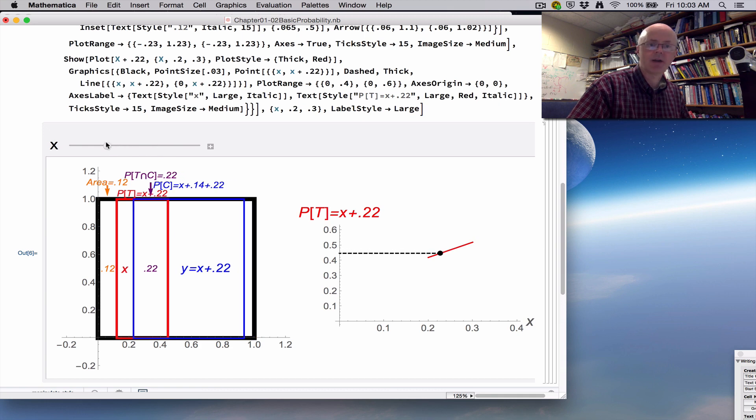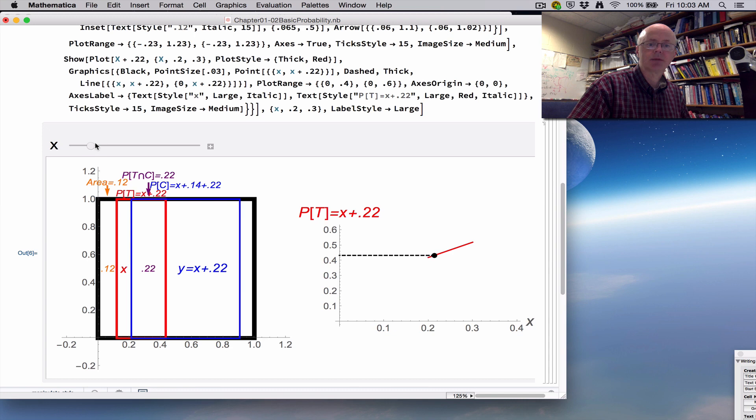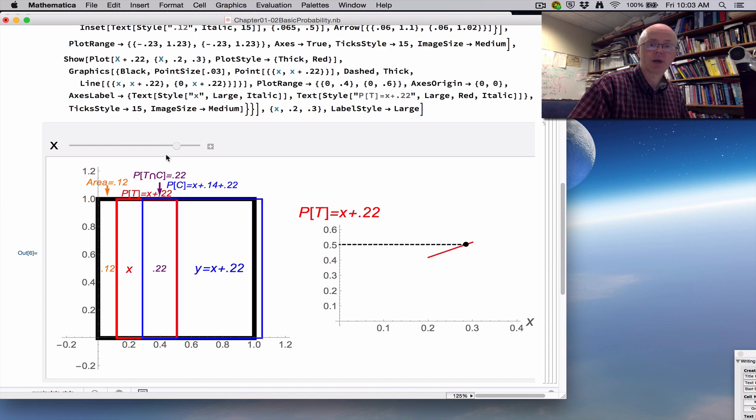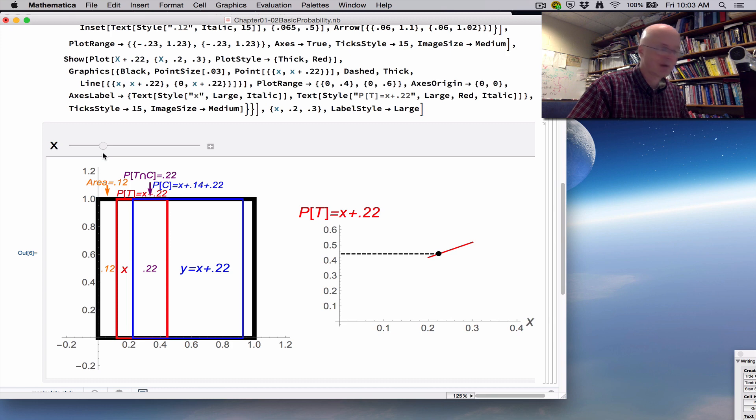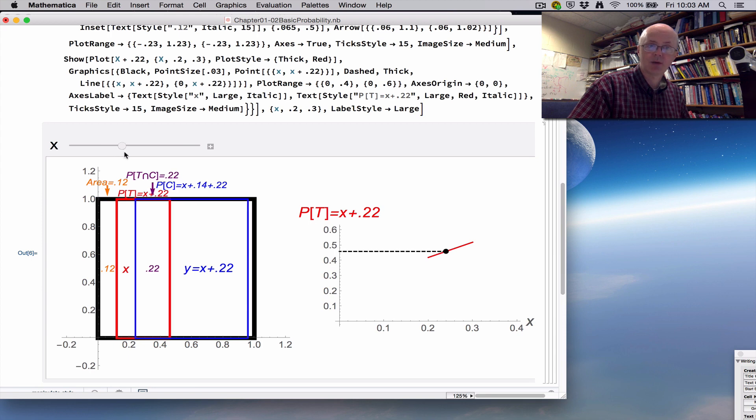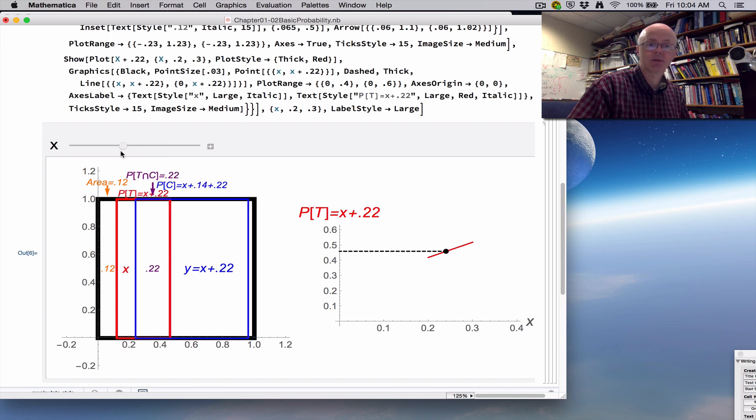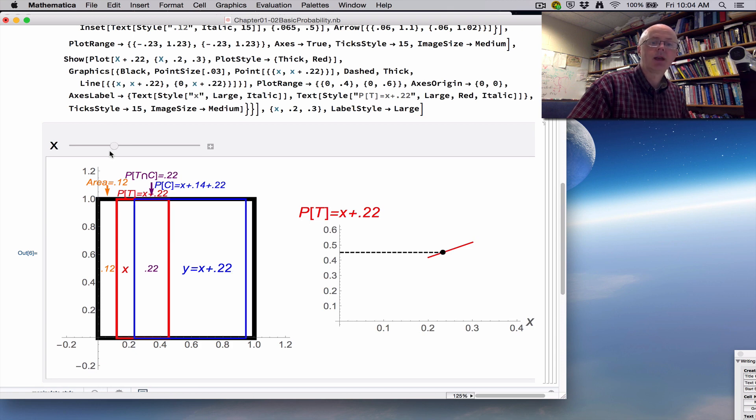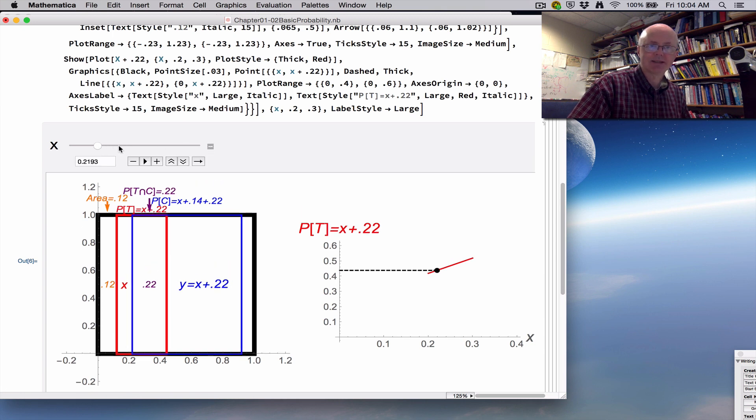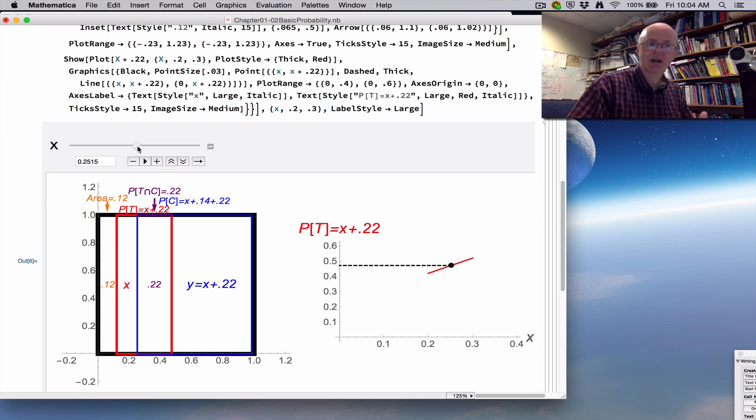Here's what it looks like. I not only have the Venn diagram on the left but also a graph on the right. The black box represents the sample space. Instead of circles I've got rectangles - the red rectangle represents those who visit a physical therapist, the blue rectangle represents those who visit a chiropractor. Notice I've got 0.12 and 0.22 in there.